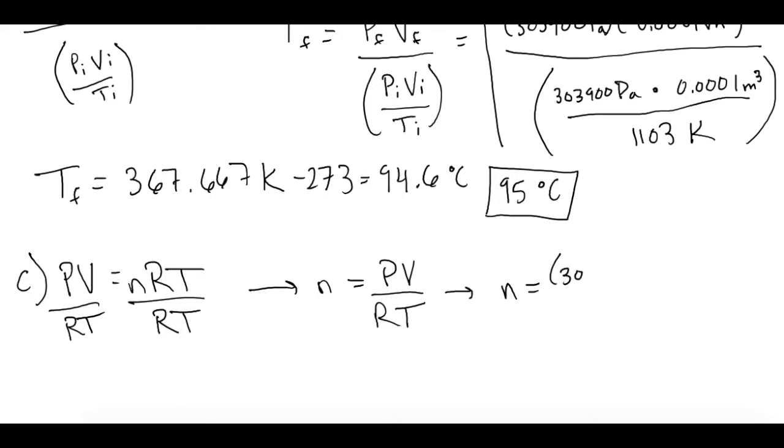So pressure initially was 303,900 pascals times the volume was 0.0003 meters cubed. And that is all over 8.314 joules over mole K times the initial temperature they gave us was 1103 Kelvin.